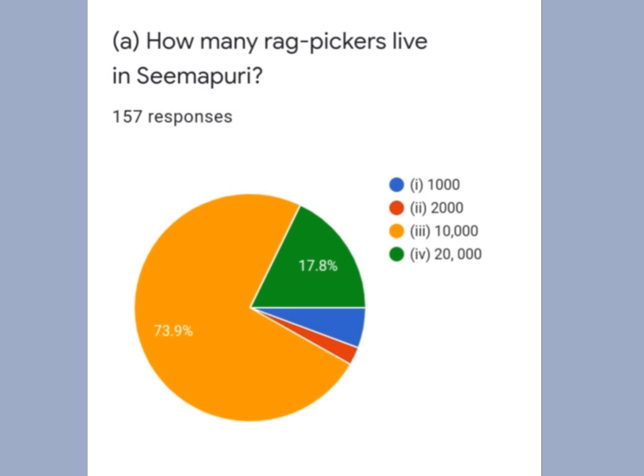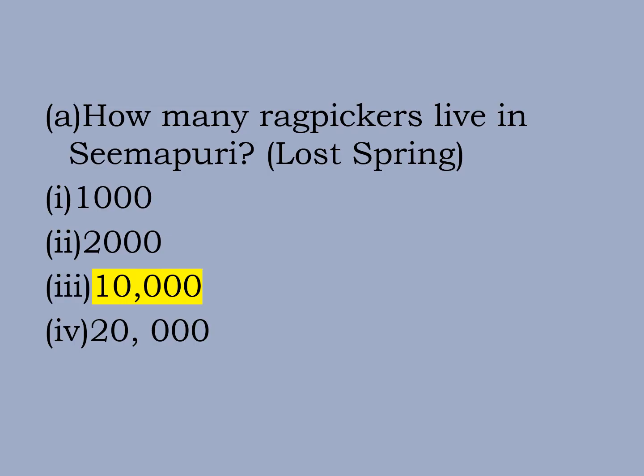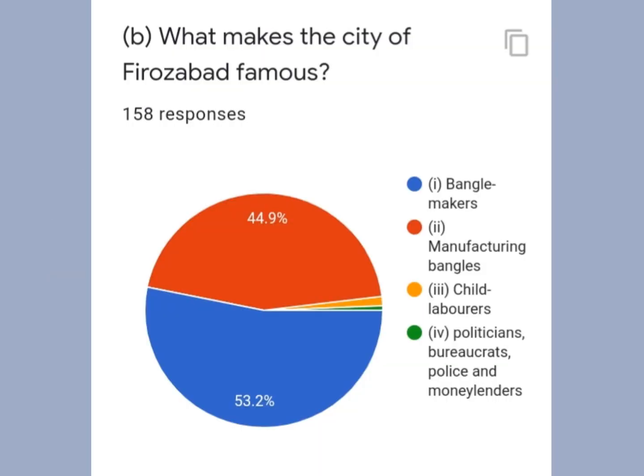Question 4, A part: how many rag pickers live in Seemapuri? Most students gave the right answer, option 3: 10,000 rag pickers. Question 4, B part: what makes the city of Firozabad famous? Students were confused between option 1 and option 2, but the correct answer is option 2 — Firozabad is not famous for people, the bangle makers, but for manufacturing bangles.